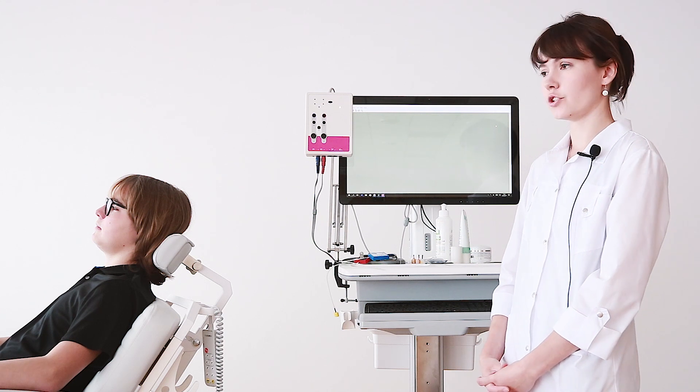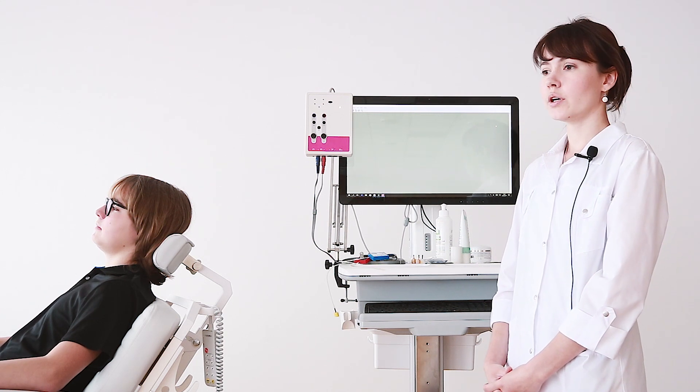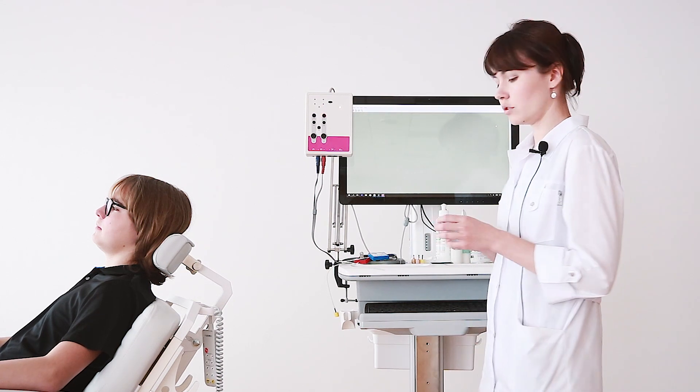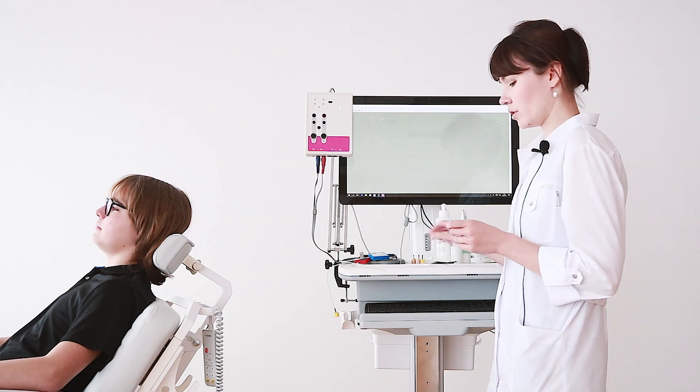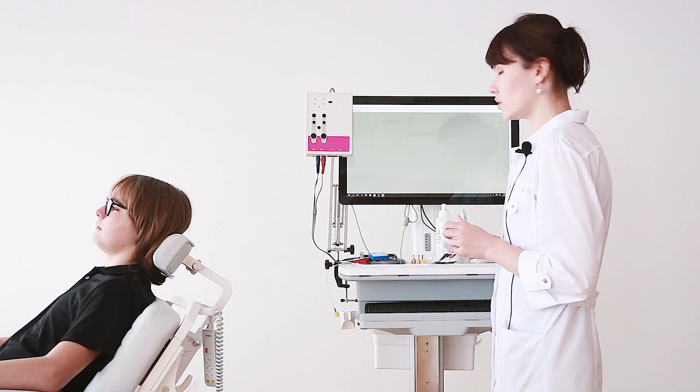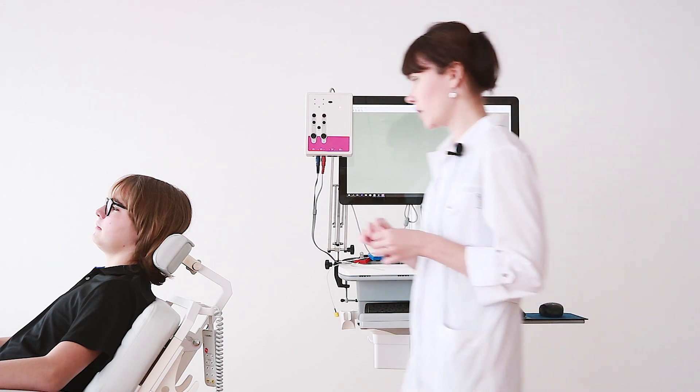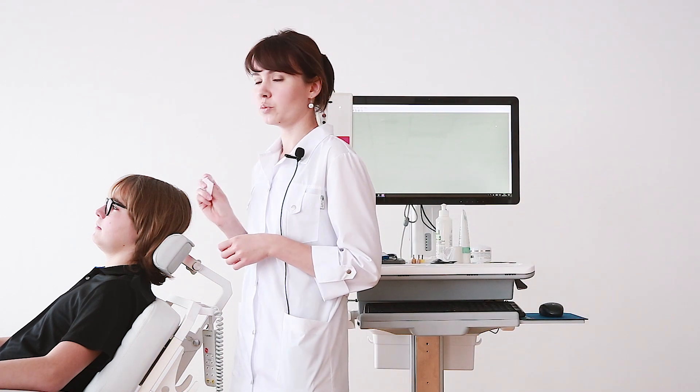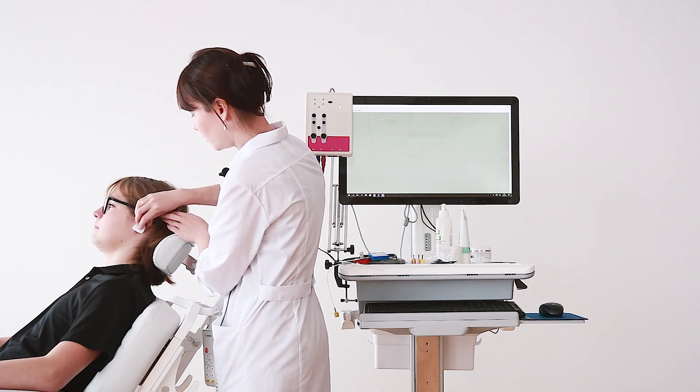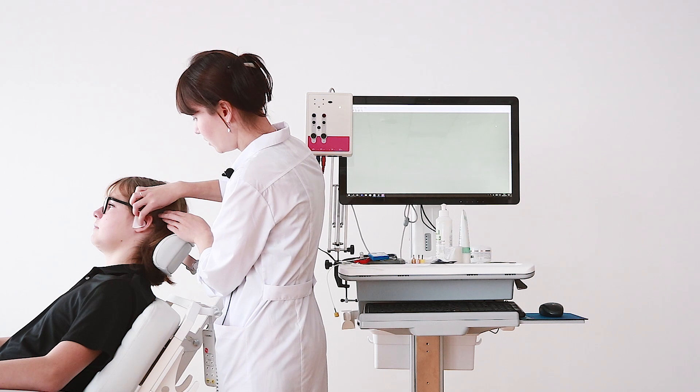Let's start to prepare the skin before the procedure. To reach good impedance during stimulation, we need to prepare it in the right way. First, we need to degrease the points of future electrode positions via an isopropyl napkin. The active electrode we will put in the left ear canal today. We degrease the skin of the ear.